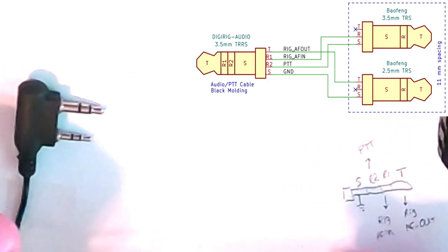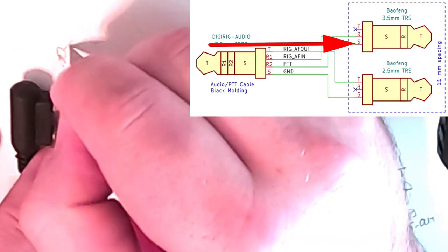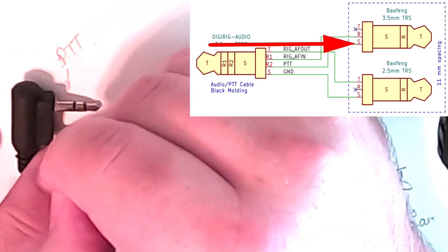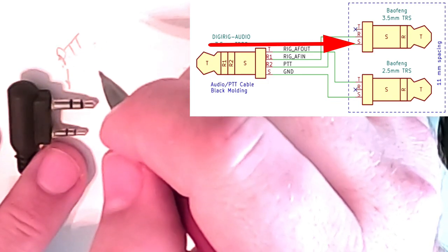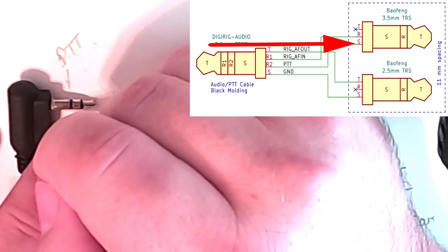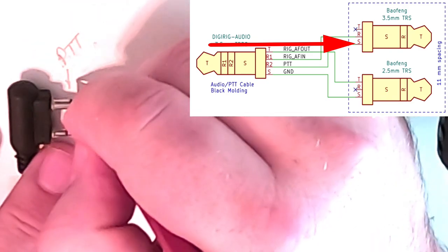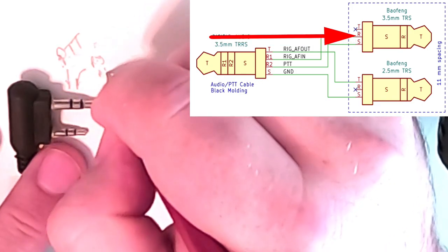Now on this one, the 2.5 millimeter, this is PTT. So ground to ground is what makes the PTT. Sleeve is PTT. Ring on the 3.5 millimeters is, if I follow the line, this is rig AF in.